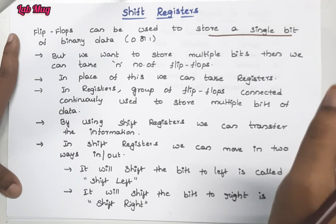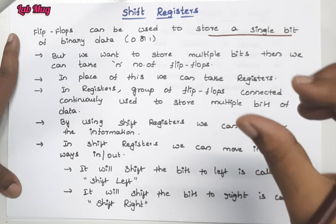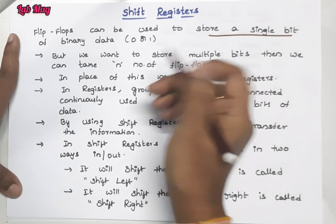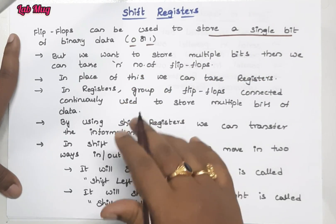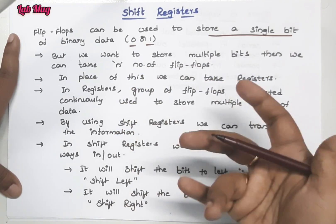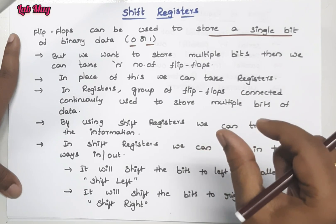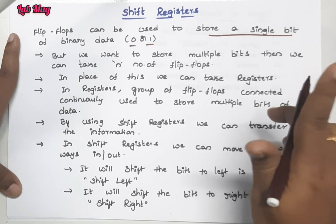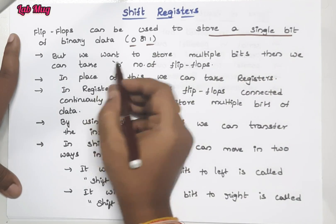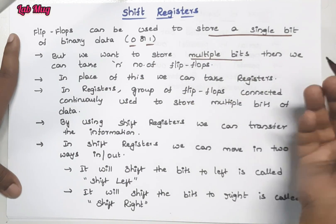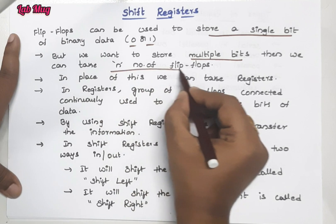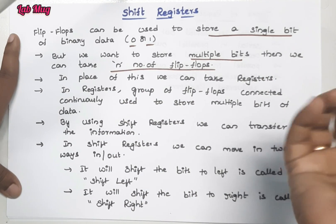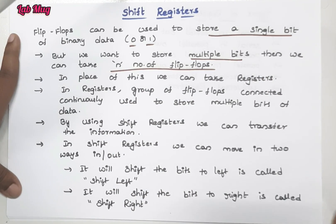A single bit stores zero or one. A collection of 8 bits is called a byte. Flip-flops can only store one bit each, so to store 8 bits we need 8 flip-flops, because each flip-flop stores only one bit of information. To store multiple bits we use multiple flip-flops.